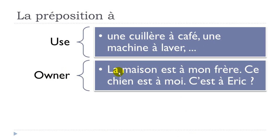To express ownership, use être + à: La maison est à mon frère — the house belongs to my brother. Ce chien est à moi — this dog is mine. You can put a noun after à (à mon frère), a pronoun (à moi), or a person's name: C'est à Éric? — does it belong to Éric? This is commonly used to say someone owns something.